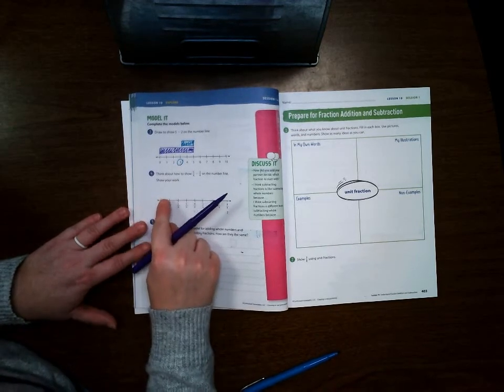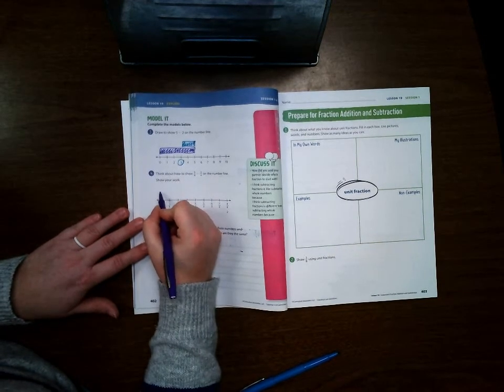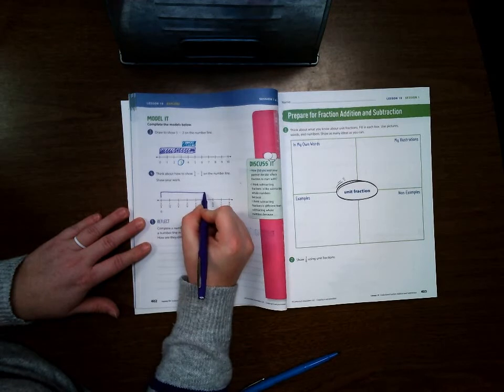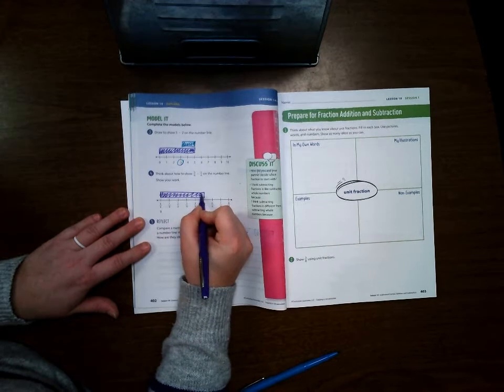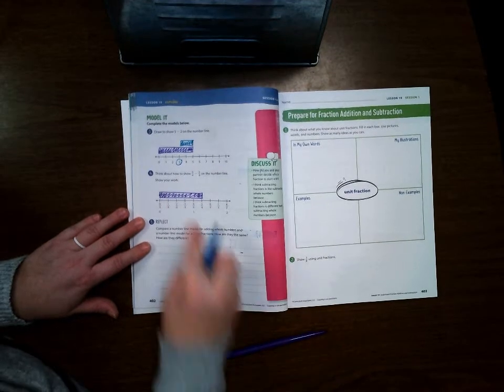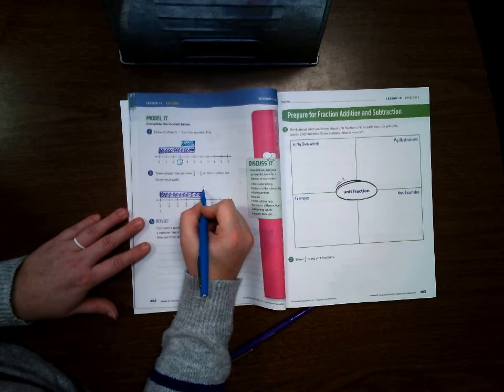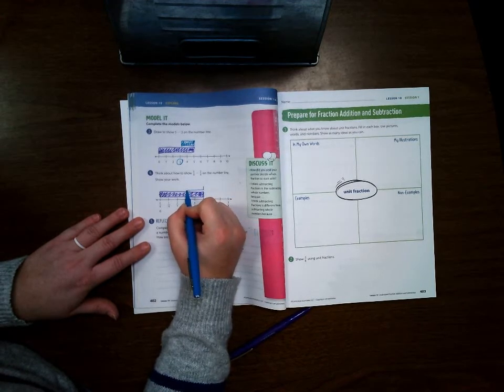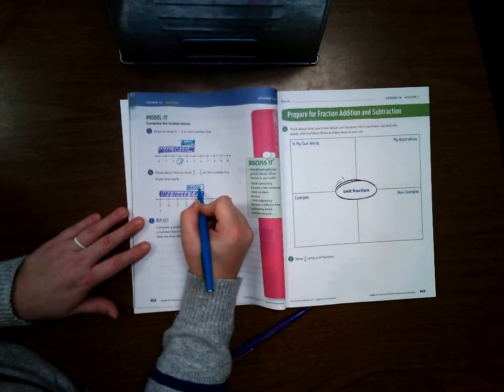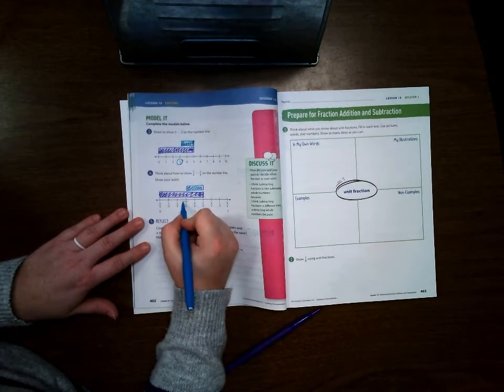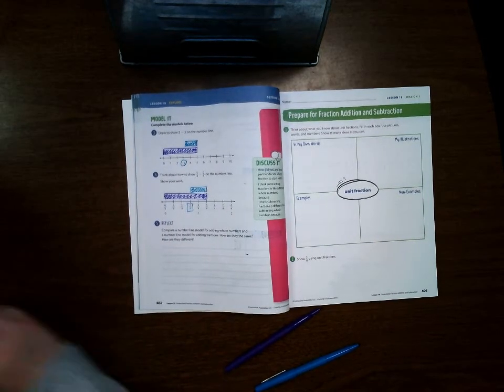Now down here it's wanting us to subtract 5/4 minus 2/4. So we're going to draw our 5/4, and again just like we did up here, we're going to start at the 5/4 place and we're going to go back 2/4 to subtract, which leaves us at 3/4.